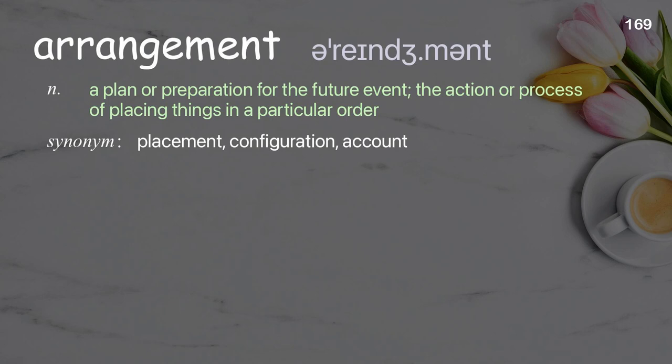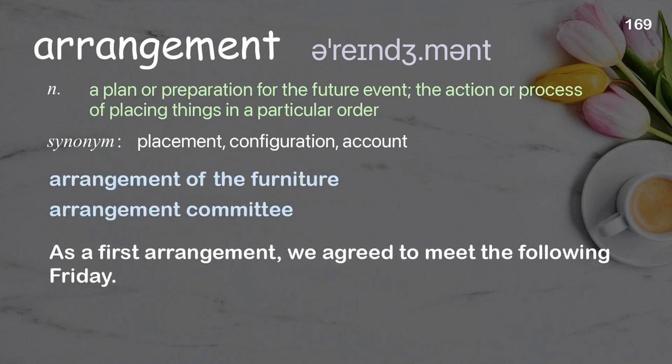Arrangement: a plan or preparation for a future event; the action or process of placing things in a particular order. Examples: as a first arrangement, we agreed to meet the following Friday.